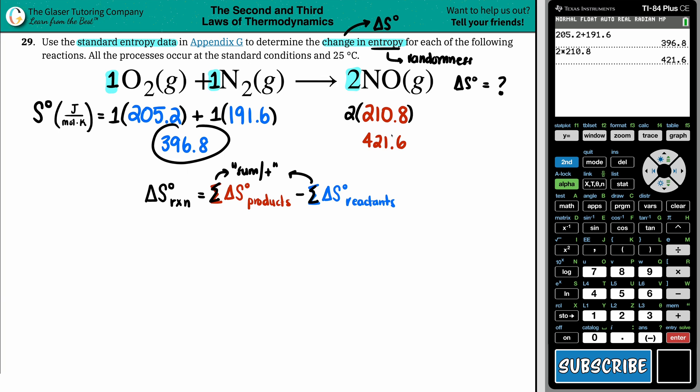Now I'm just going to use these values and plug them in into my equation. So the change in the entropy, the delta S standard for the whole entire reaction is the 421.6 minus the 396.8. Let's see. I'm going to take the answer. So second minus, I could just grab that in there. Beautiful what the calculator can do. And we get 24.8 units are the same units as what the entropy is. So this would be joules per mole times Kelvin.